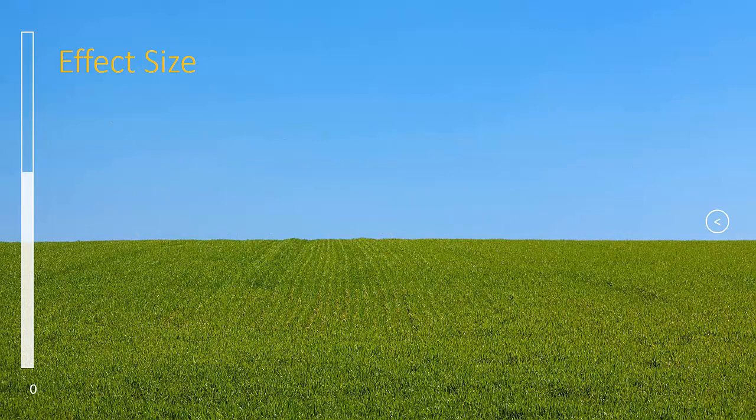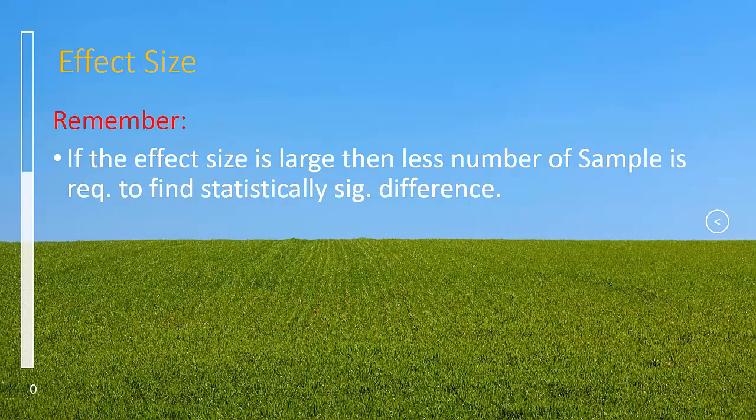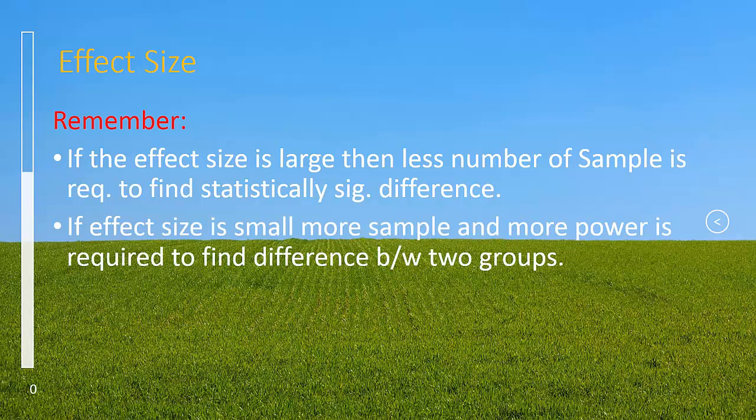Remember, if the effect size is large, then less number of sample size is required to find statistically significant difference. If effect size is small, more sample and more power is required to find the difference between two groups.